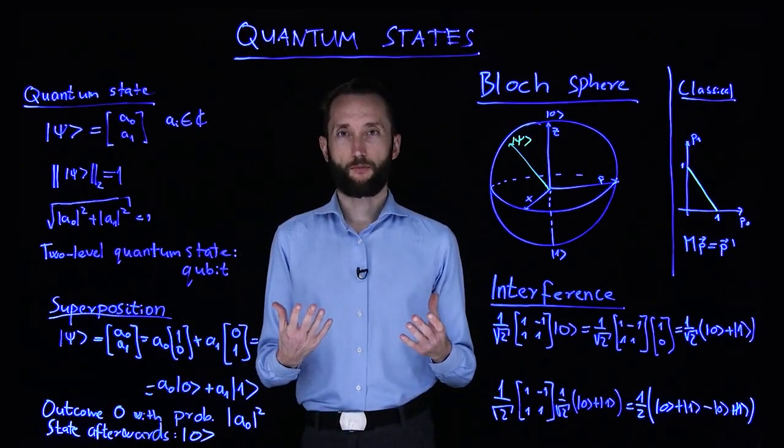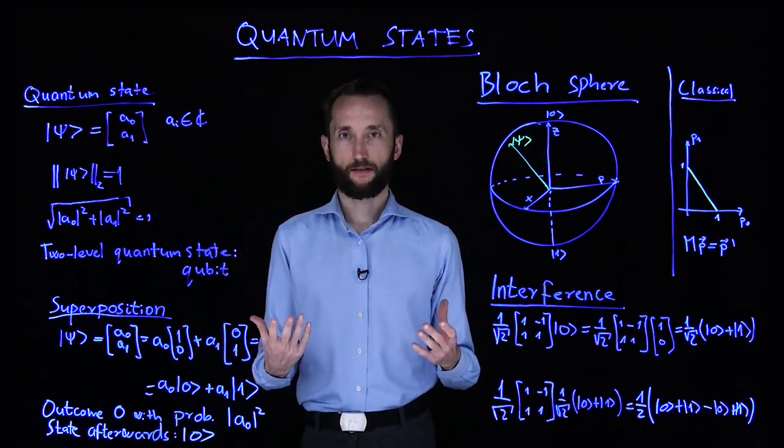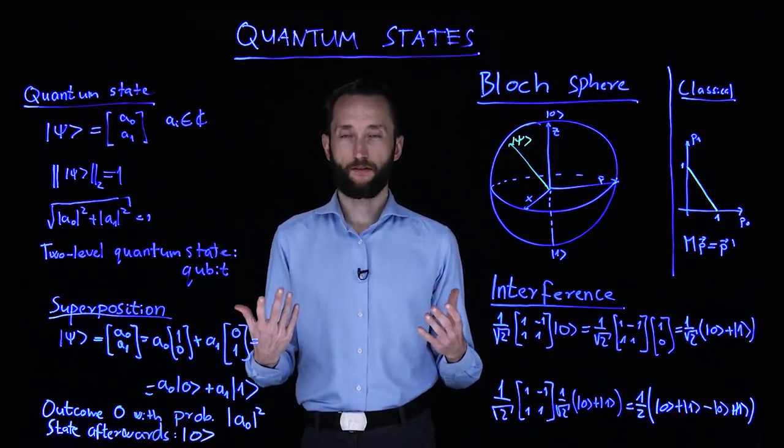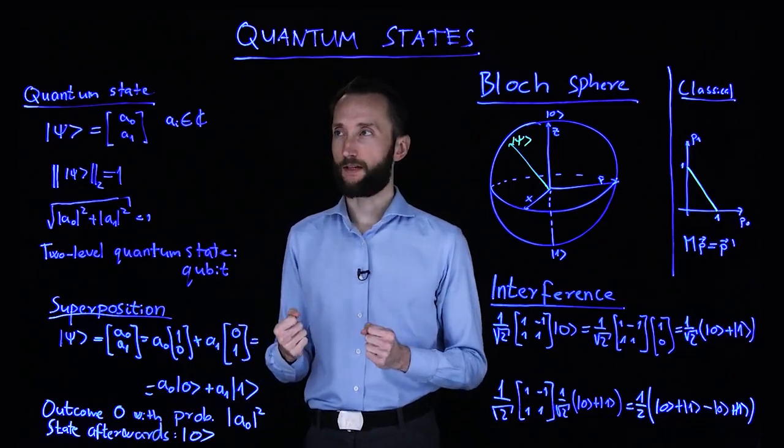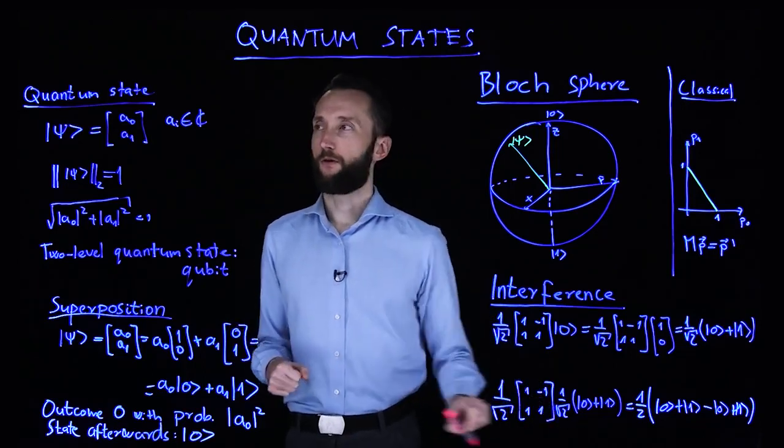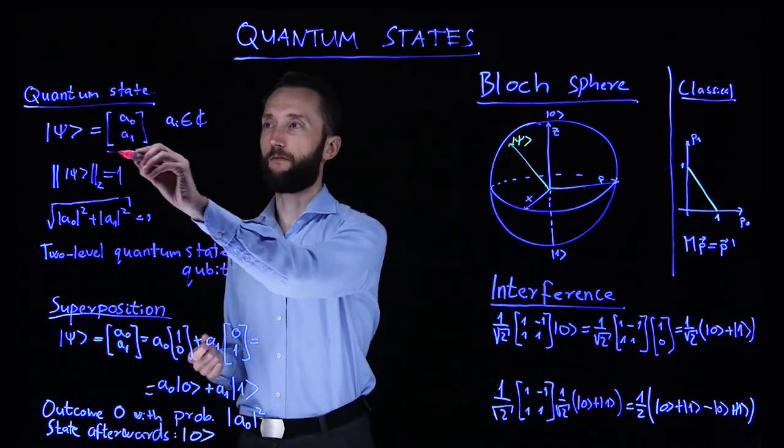We introduced classical probability theories and the stochastic vector, which describes a probability distribution. So based on that, we can easily introduce quantum states. A quantum state is just like a stochastic vector. You can write it as a column vector.